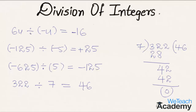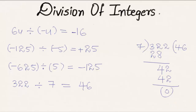We can see that if a positive integer is divided by a negative integer, or a negative integer divided by a positive integer, we get the result as a negative integer. If the signs are the same, we get the result as a positive integer. Do like and subscribe to vdhacademy.com.